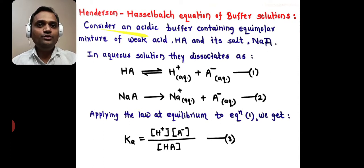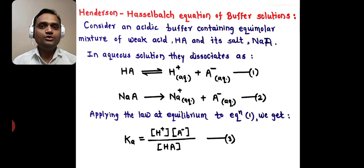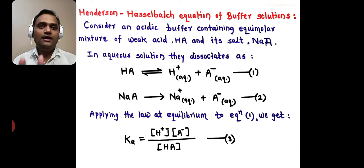For that, we have to consider an acidic buffer containing an equimolar mixture of a weak acid, say HA, and its salt, say NaA.